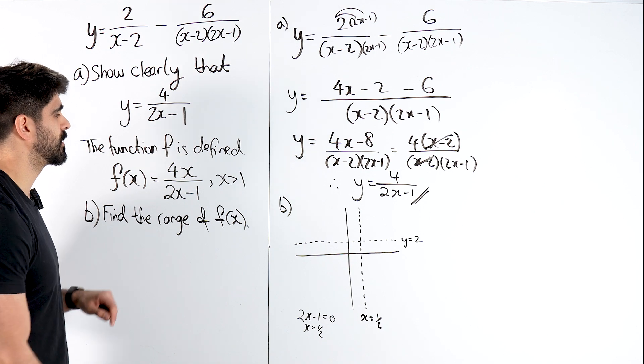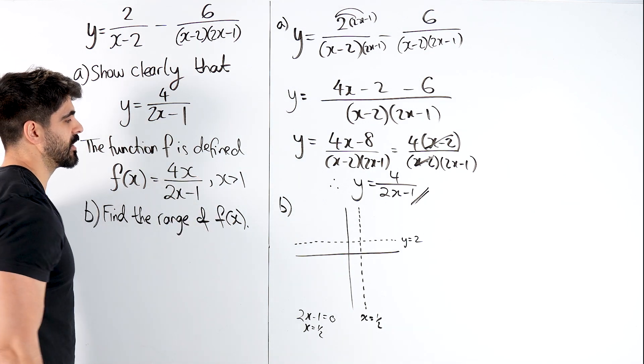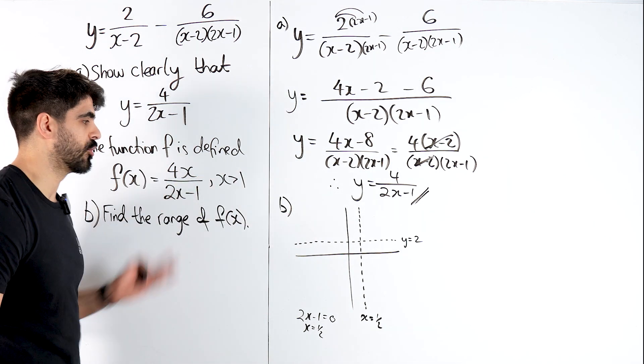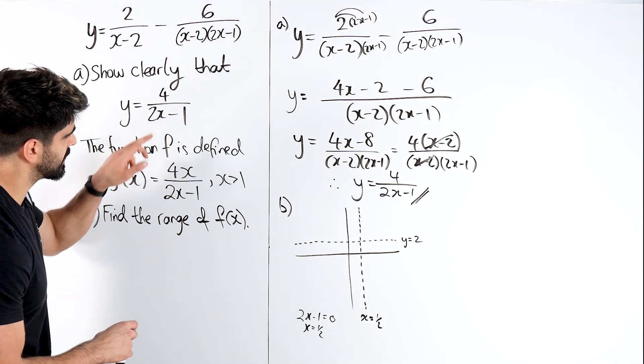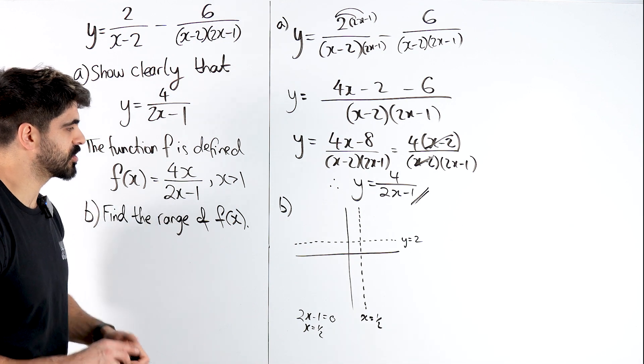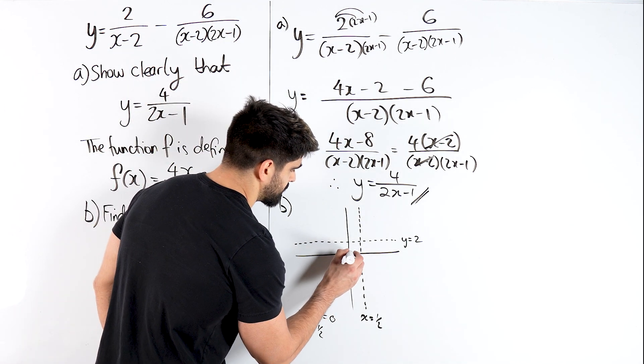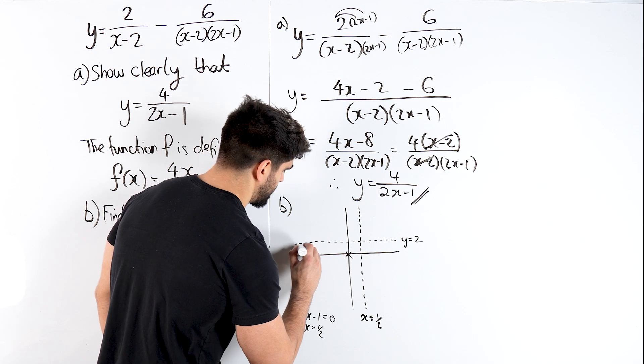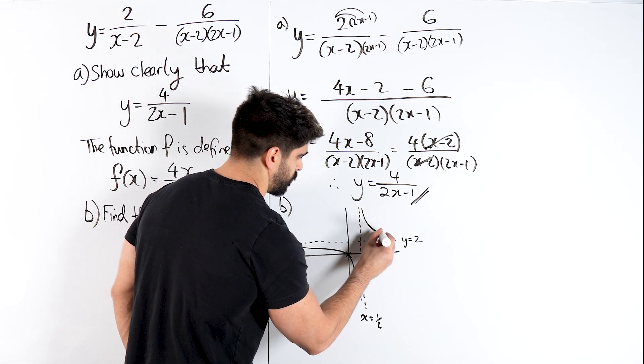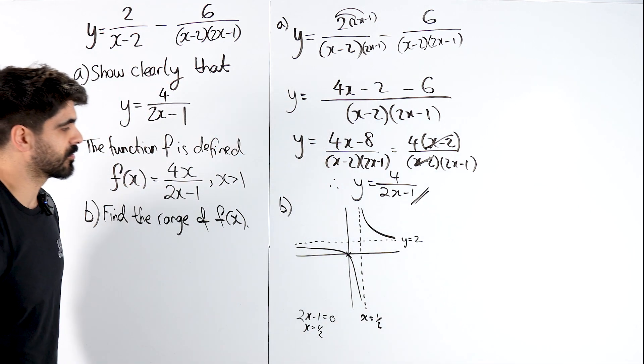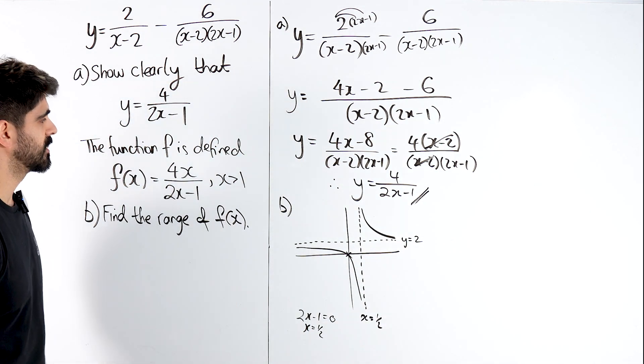This is nice and simple because if you sub in x=0 here, the numerator just becomes 0, the whole thing is 0. So when x is 0, you get 0 divided by minus 1, which is 0, and that means it goes through here. So it is a quadrant 3 and quadrant 1 reciprocal graph. There we go, we have sketched it.